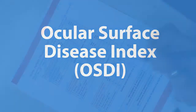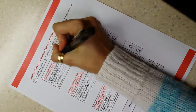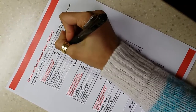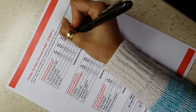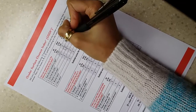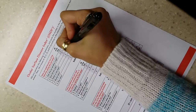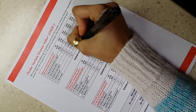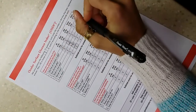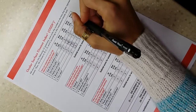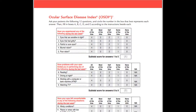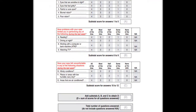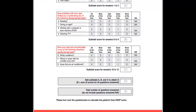Ocular Surface Disease Index. This is a series of 12 questions targeted at distinguishing normal patients from dry eye disease. The OSDI encourages the patient to rate themselves on questions like: have you experienced gritty or sore eyes over the last week? Have they been limited in visual tasks like watching TV or reading? The scores are then tabulated according to the instructions outlined on the form.